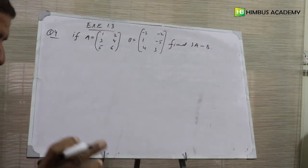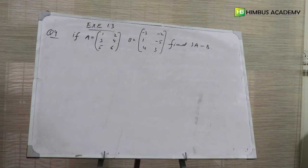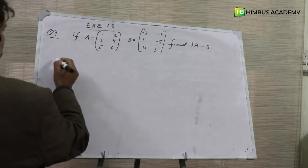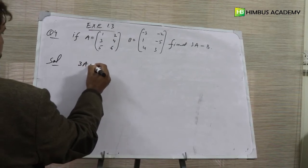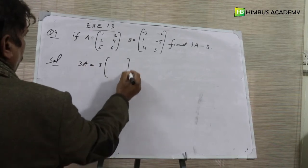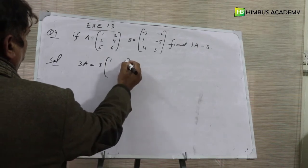3A minus B means multiply matrix A with 3, then subtract matrix B from the resulting matrix. Solution: First of all we will find 3A.